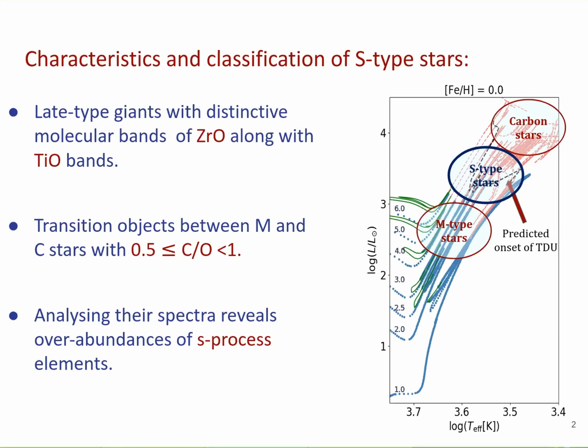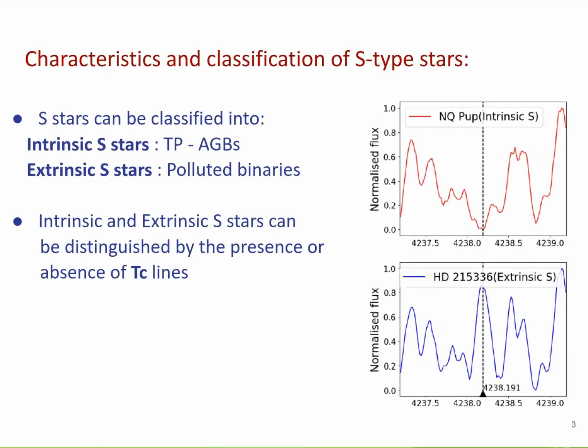You have to be careful here, because all S-stars show the S-process elements, but not all S-type stars make the S-process elements themselves. The S-stars come in two flavors: the intrinsic and the extrinsic type. The intrinsic stars are intrinsically producing the S-process elements, which are brought to the surface with the third dredge-up episodes — it's a genuine thermally pulsing AGB star — while an extrinsic star is a polluted binary.